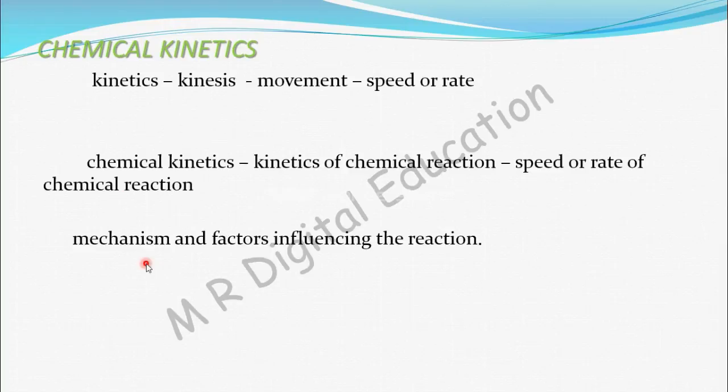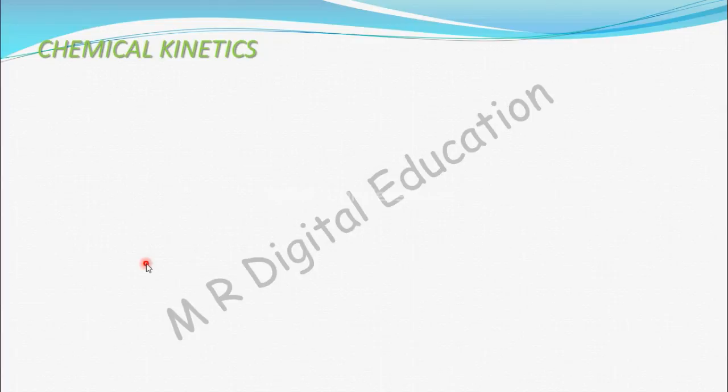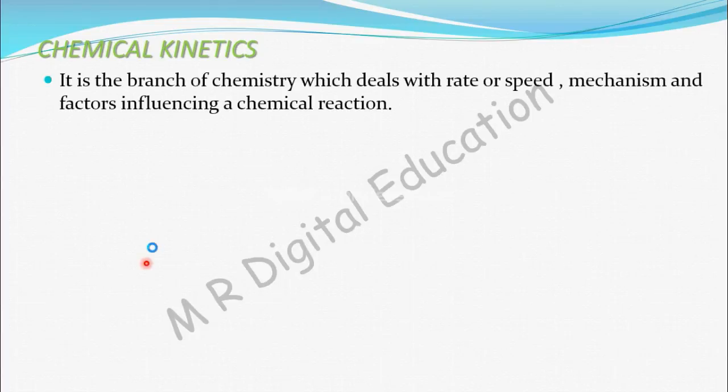Now, the full definition of chemical kinetics: Chemical kinetics is the branch of chemistry which deals with rate or speed, mechanism, and factors influencing the chemical reaction.